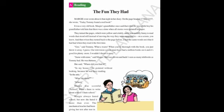Maggie said, 'Tommy, what a waste — when you are thorough with a book, you just throw it away, I guess. Our television screen must have had a million books on it, and it's good for plenty more. I wouldn't throw it away.' 'Same with mine,' said Maggie. She was 11 and hadn't seen as many telebooks as Tommy had — he was 13. She asked, 'Where did you find it?' 'In my house,' he pointed, without looking, because he was busy reading, 'in the attic.' 'What's it about?' 'School.' Maggie was scornful. 'School? What's there to write about school? I hate school.'